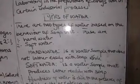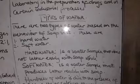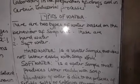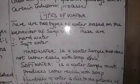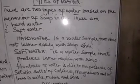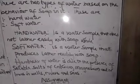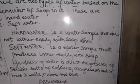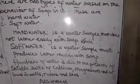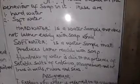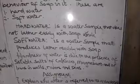Let's get to the types of water we have. There are two types of water based on the behaviour of soap in it: hard water and soft water. Hard water is a water sample that does not lather easily with soap — no matter how much you use, the water will not produce enough lather. Soft water is a water sample that produces lather readily with soap. For instance, a little amount of rainwater with any lather soap will show how well it produces lather. Such is what we call soft water.